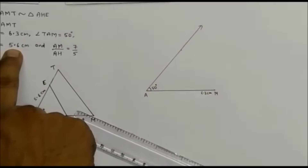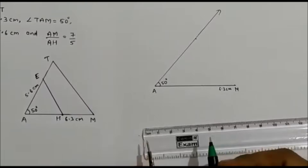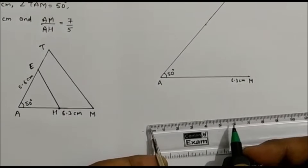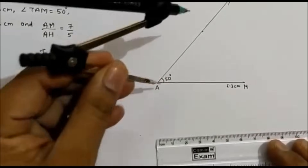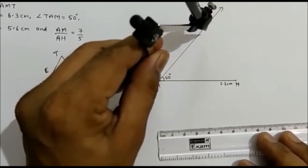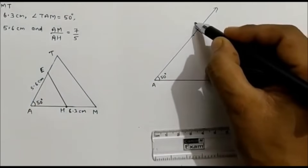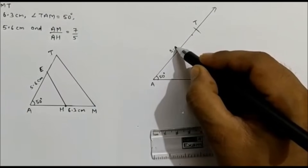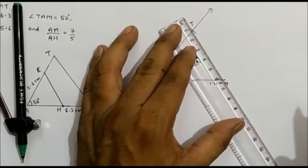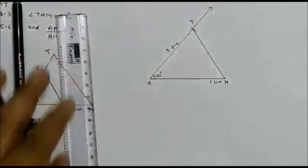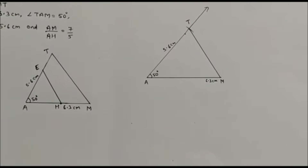Distance AT is 5.6 cm, so we take 5.6 cm. From point A, cut an arc here. Mark this as point T — this is 5.6 cm. Join to complete the triangle. So triangle AMT has been constructed.